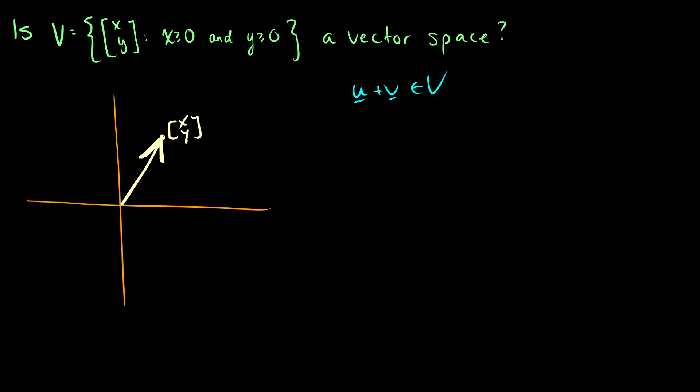So we have u plus v has to be in V. So if we take another vector that's in this space, we can add them together, it's going to still be up in this first quadrant here. So that's fine.